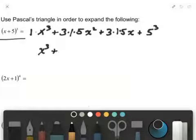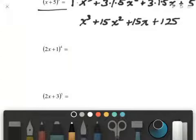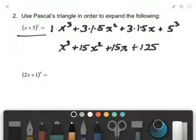So we end up with x cubed plus 15 x squared plus 15 x plus 125. So that's that one. I haven't even tried this one yet, well maybe I'll just try it in the next video.